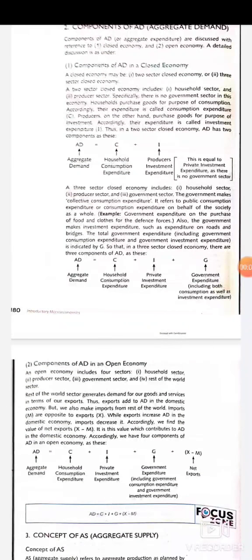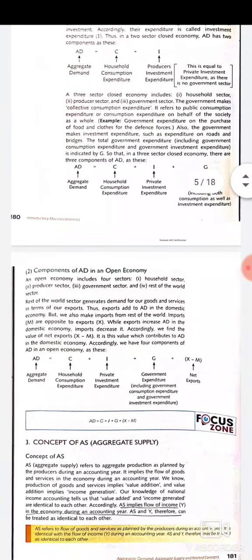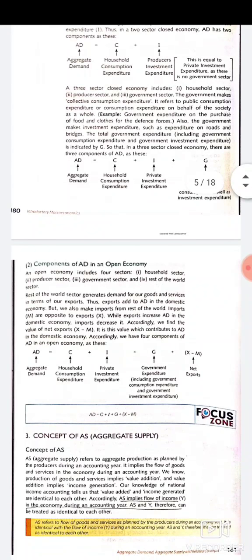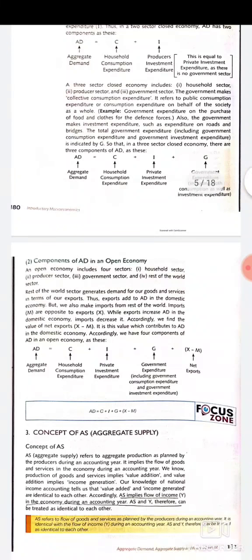Next is the concept of aggregate supply. Aggregate supply refers to aggregate production as planned by the producers during an accounting year. Production of goods and services means value addition, and value addition means income generation. According to the concept of national income, value addition and income generation are identical terms. So aggregate supply means the flow of income in the economy during an accounting year — aggregate supply and income are the same.